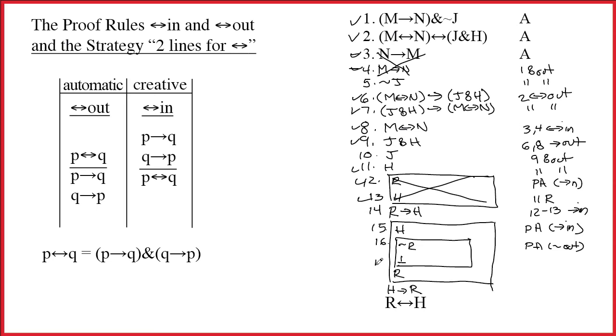And all we have to do is get a contradiction. But, of course, we've noticed it up here. Let's just put them together. 5, 10 ampersand in would give us J ampersand tilde J. 5, 10 ampersand in. And now we're actually done with the proof.